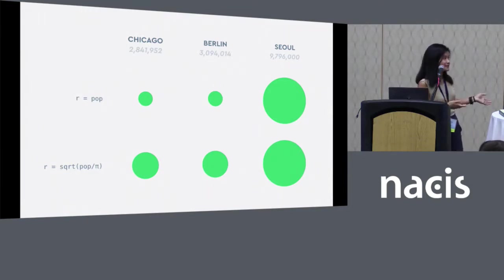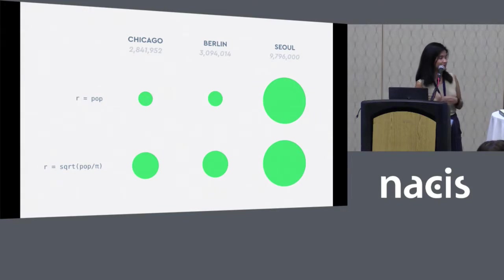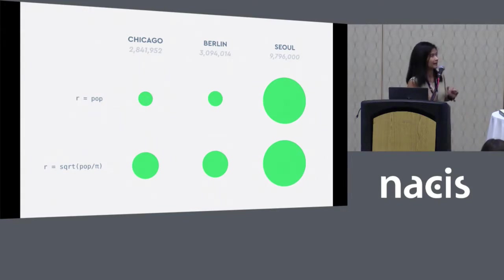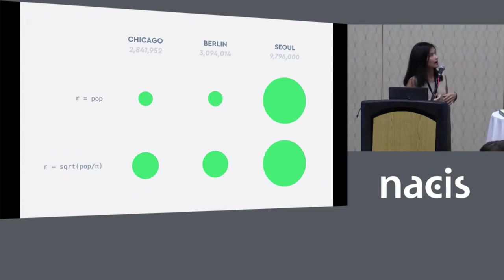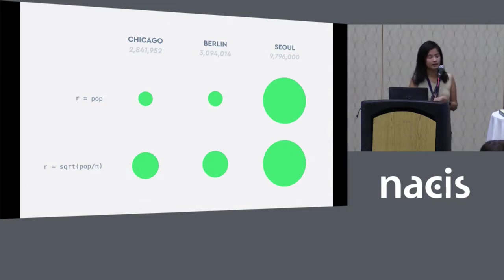The difference, as you can see, is that radius scales linearly, while area scales quadratically. It's not a totally accurate visualization to simply set population to radius. As you see in the top example, there's a more dramatic difference between the cities with lower population versus the cities with higher population. The bottom is the effect that we're trying to achieve.